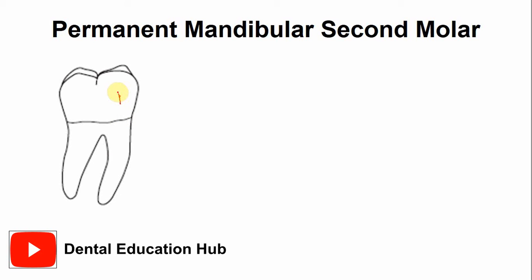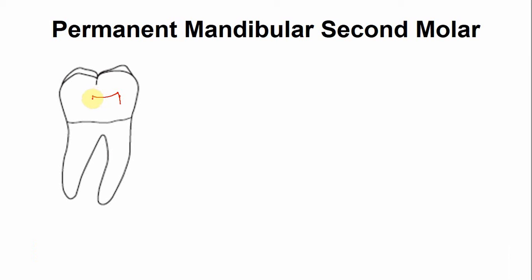This is the mesiobuccal pulp horn. It is larger and more prominent as compared to the distobuccal pulp horn. The overall dimensions of the pulp chamber are slightly less as compared to the first molar.